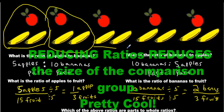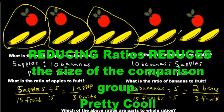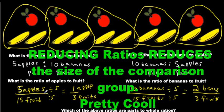2 bananas for every 3 fruits. Notice the word apple doesn't come into play here. It's just 2 bananas for every 3 fruits.